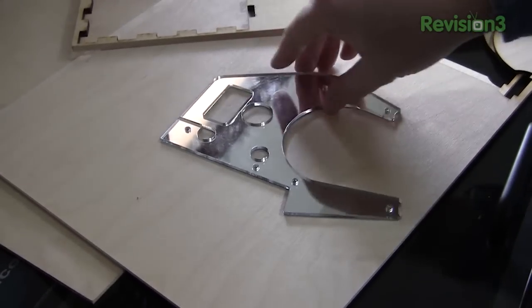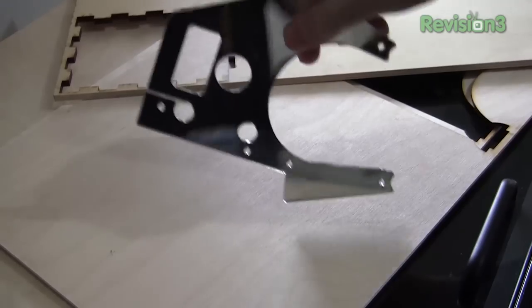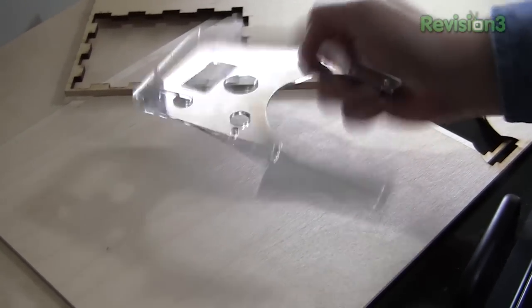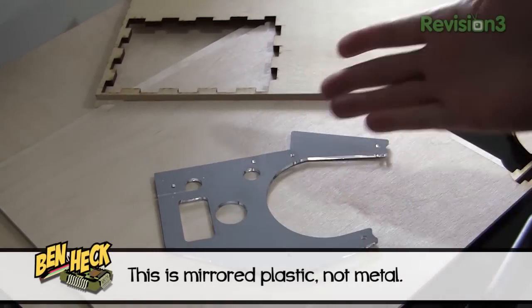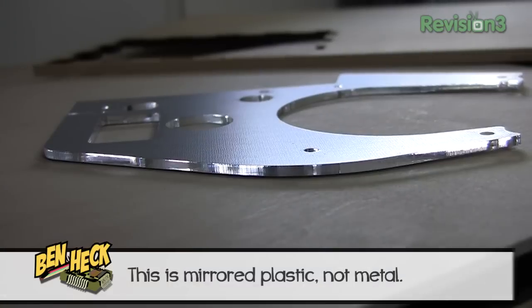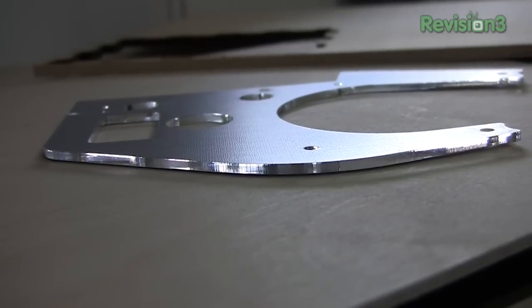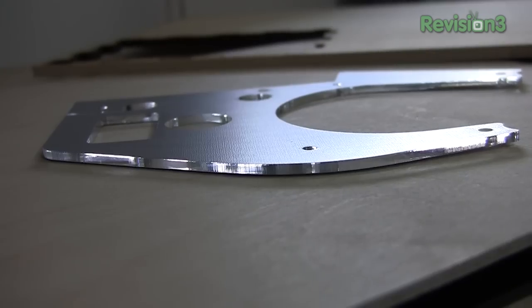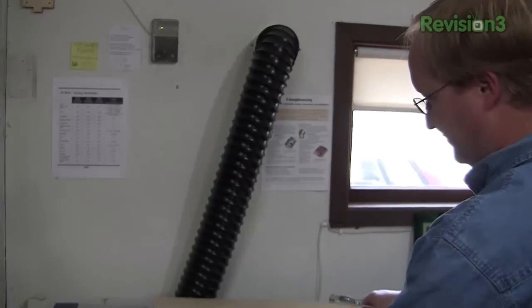Laser cutters and engravers are great at what they do, but are also limited in some ways. They are best at woods and plastics, and many types of plastic don't work at all, such as polycarbonate. You can only cut flat pieces, so to make structures you need to link pieces together or use expensive spacers and other fasteners.